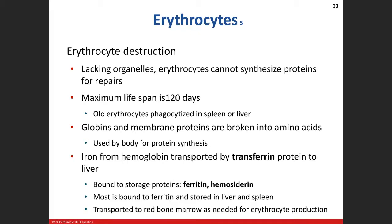Red blood cells only live for about 120 days. When they're damaged or outlive their life, we take those old red blood cells to one of two organs — mainly the spleen, or the liver — to get rid of them. But the body loves to recycle, and the destruction of red blood cells is a perfect example of how your body recycles things.